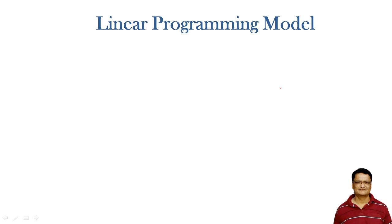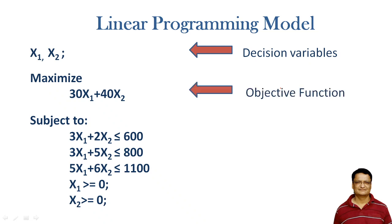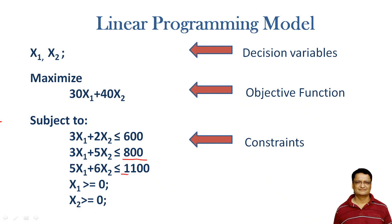Now let us formulate the complete linear programming model. The decision variables are x1 and x2. We wish to maximize the profit; the objective function is: Maximize Z = 30x1 + 40x2, subject to constraint 1 (machine 1), constraint 2 (machine 2), and constraint 3 (machine 3), and lastly the non-negativity constraint.